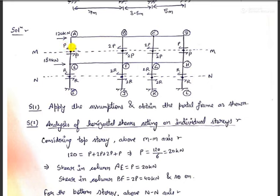In order to analyze the horizontal shear acting on each story, we take the equation of statics and thereby calculate the value of p and r. Taking the horizontal shear above the mm axis, we can calculate: p plus 2p plus 2p plus p equals 120 kilonewtons, thereby getting p equal to 20 kilonewtons.